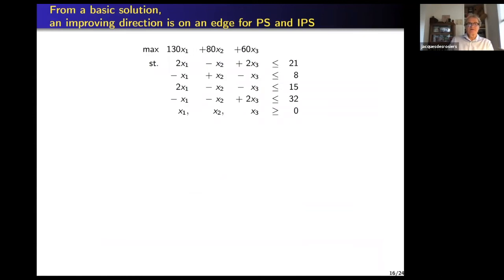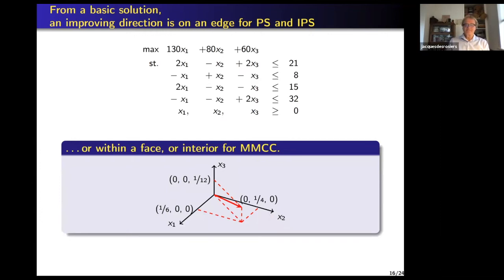A nice property: from a basic solution, an improving direction can be on an edge for the primal simplex and improved primal simplex. On this example, we start with the slack variables s1, s2, s3, s4. In the first iteration, IPS and PS will choose the best variable — x1. MMCC will rather take a combination of the three directions. We don't see that it is immediately better, but if it can be polynomial, it should go through the interior. That's why we were looking for this property for MMCC, which is polynomial for networks but not yet proven for LPs.